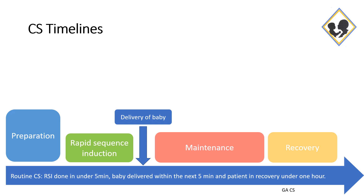This timeline puts the sequence of events during a general anesthetic for cesarean section nicely into perspective. Ideally, in the best interest of the mother and the baby, we should aim for induction of anesthesia to be done in under five minutes, with delivery of the baby during the next five minutes, and the whole procedure not lasting longer than an hour. This means the surgical team, including the scrub nurse, surgeon, and surgical assistant, should be present and ready at the time of induction.